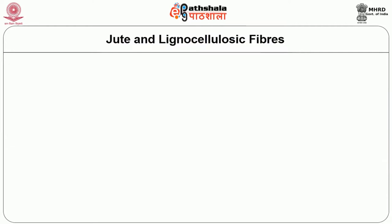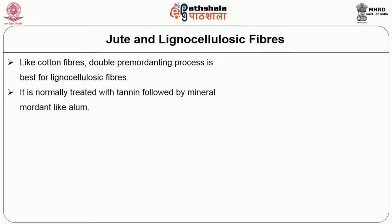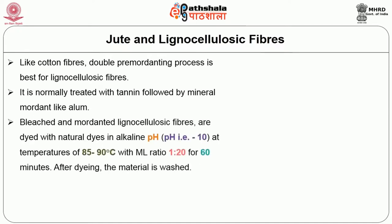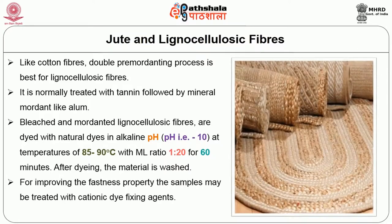Next, let us see how lignocellulosic fibres are dyed. Like cotton fibres, a double pre-mordanting process is best for lignocellulosic fibres. They are normally treated with tannin followed by mineral mordants like alum. Bleached and mordanted lignocellulosic fibres are dyed with natural dyes in alkaline pH of around 10, a temperature of 85 to 90 degrees centigrade and with a material liquor ratio of 1 to 20 for about 60 minutes. After dyeing, the material is washed, and for improving fastness properties, the samples may be treated with cationic dye fixing agents.